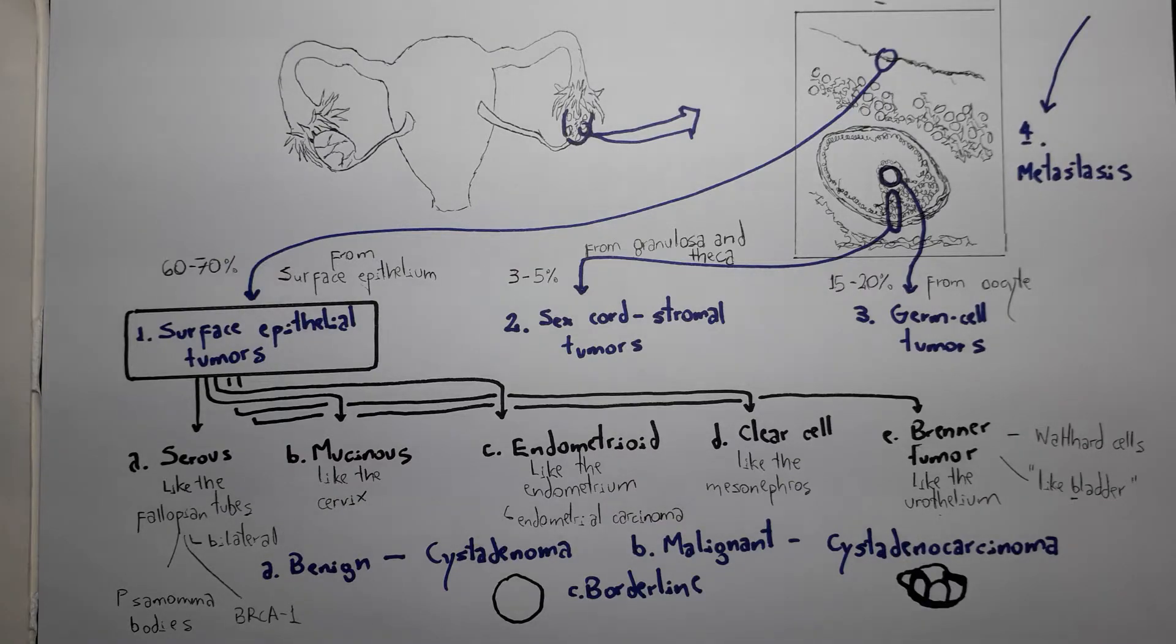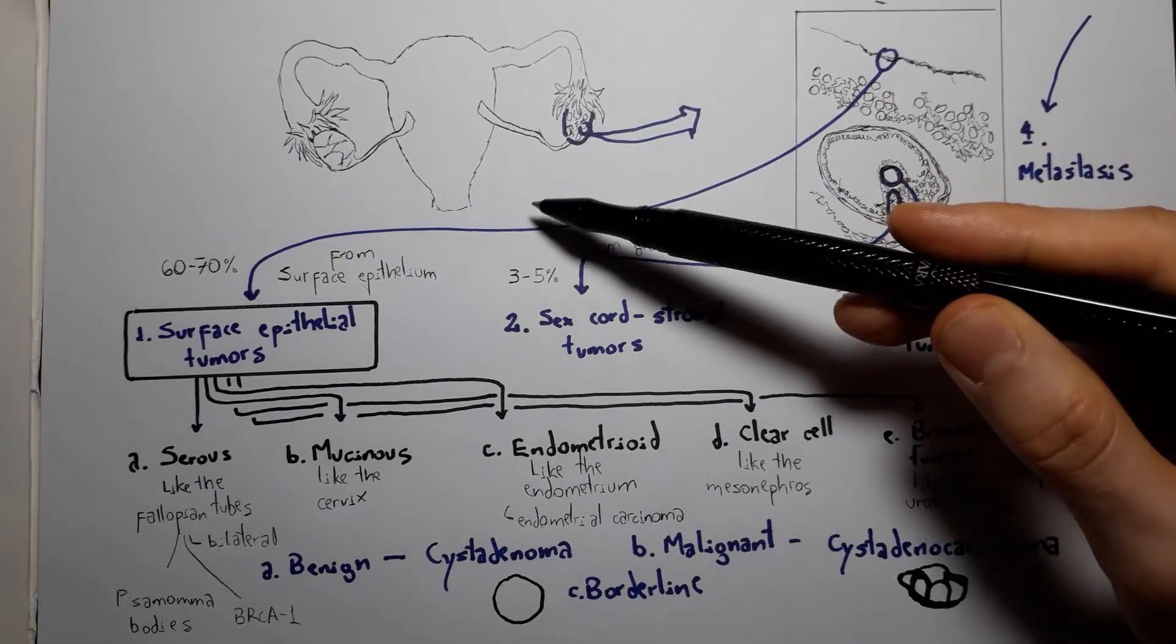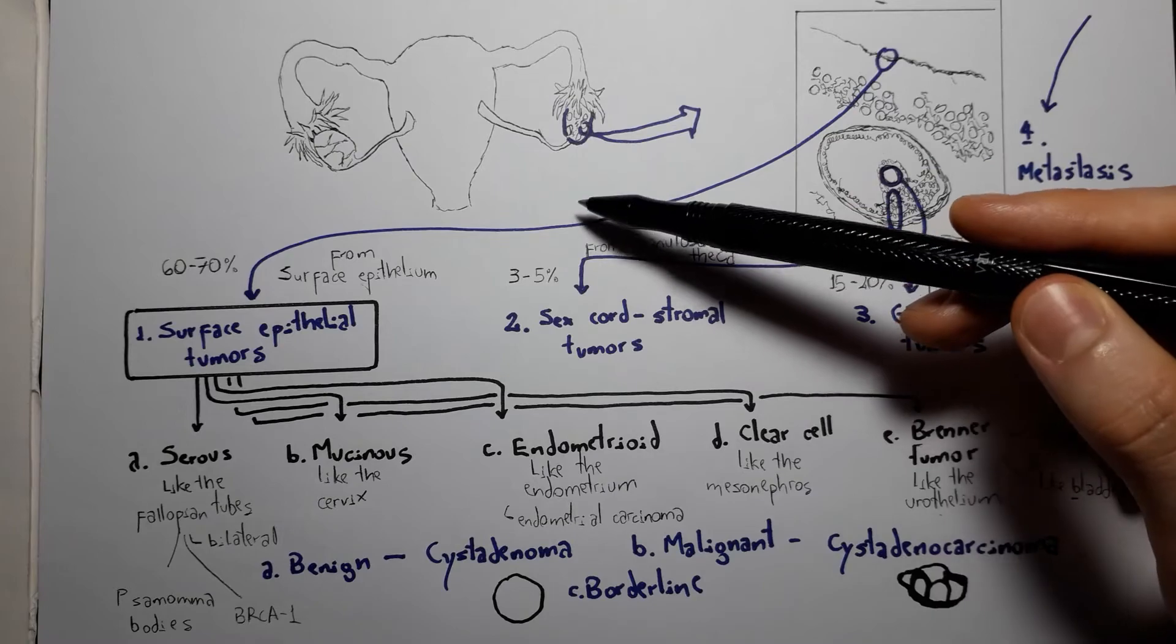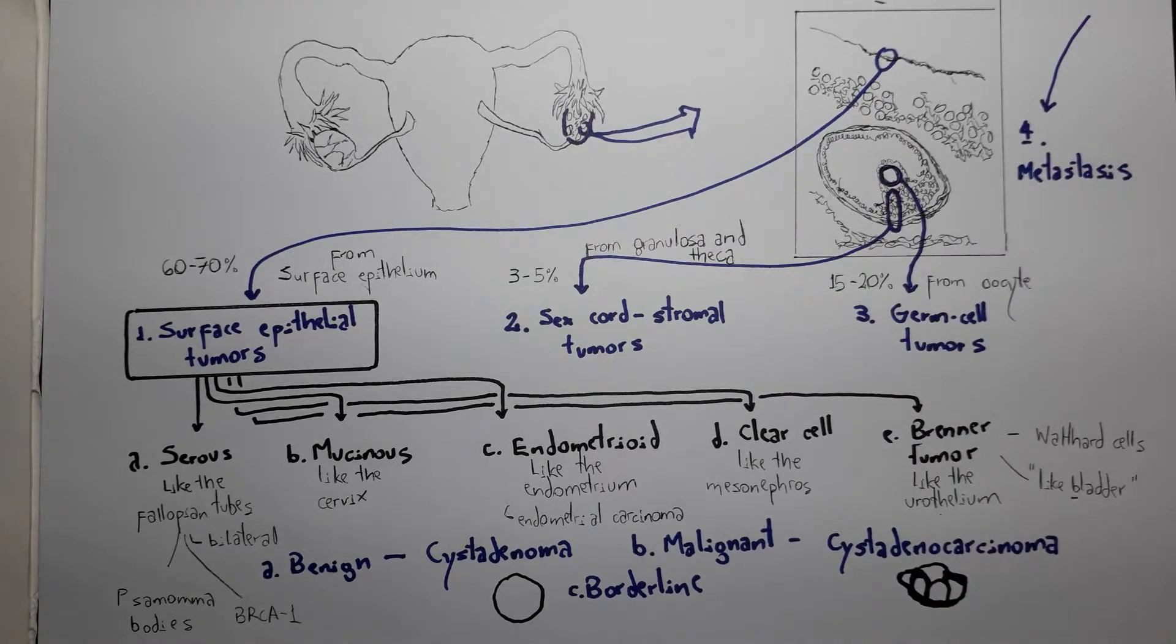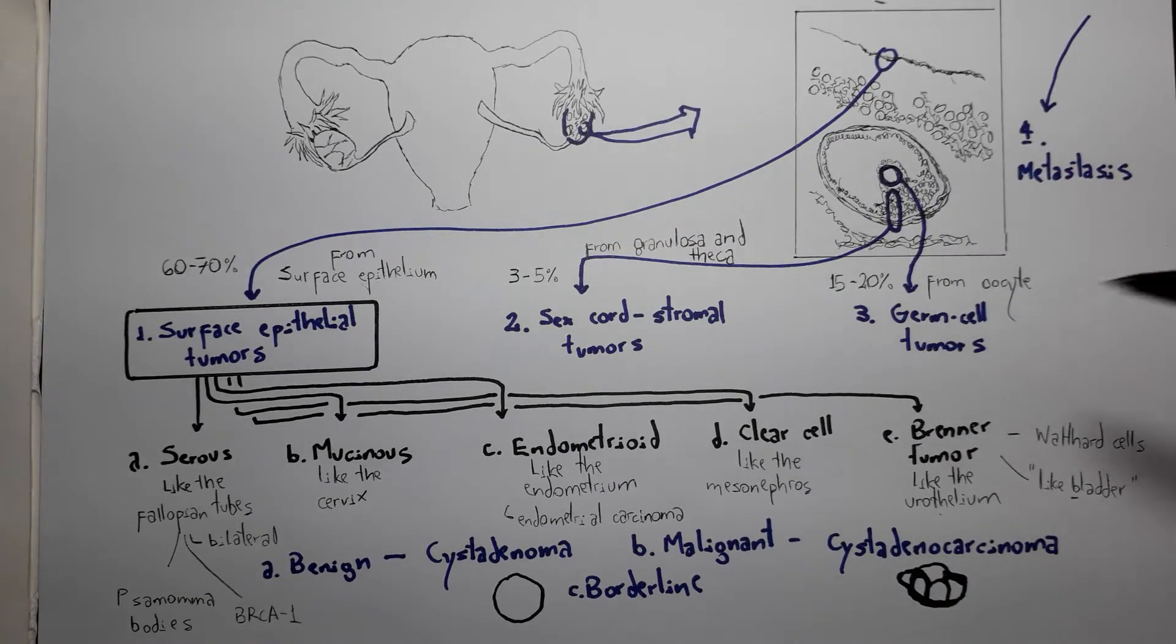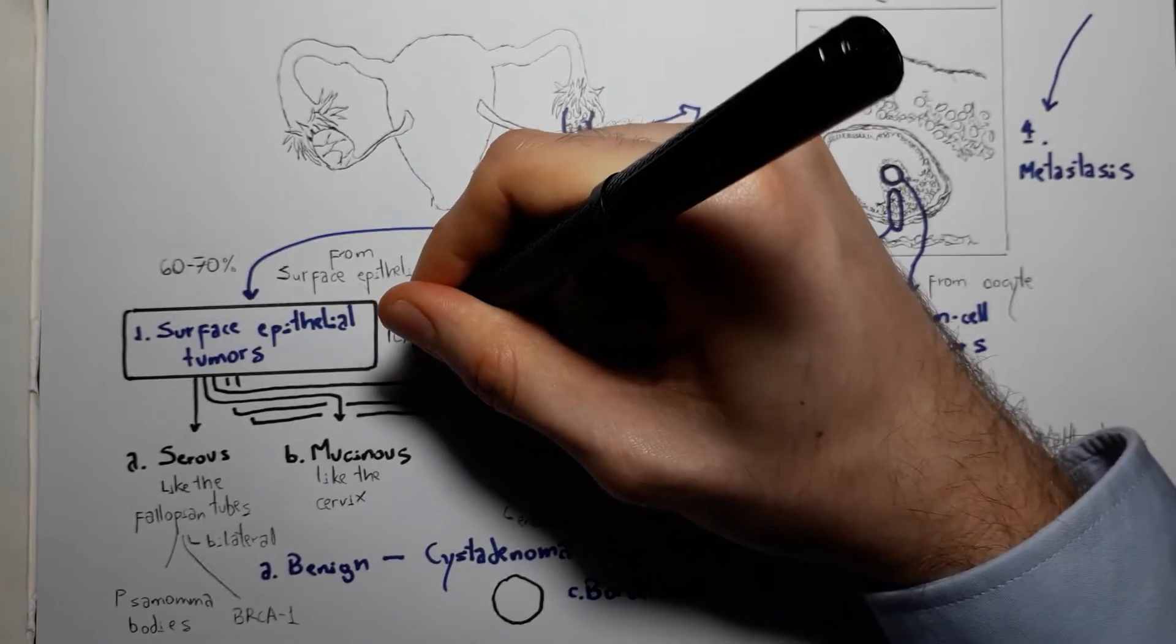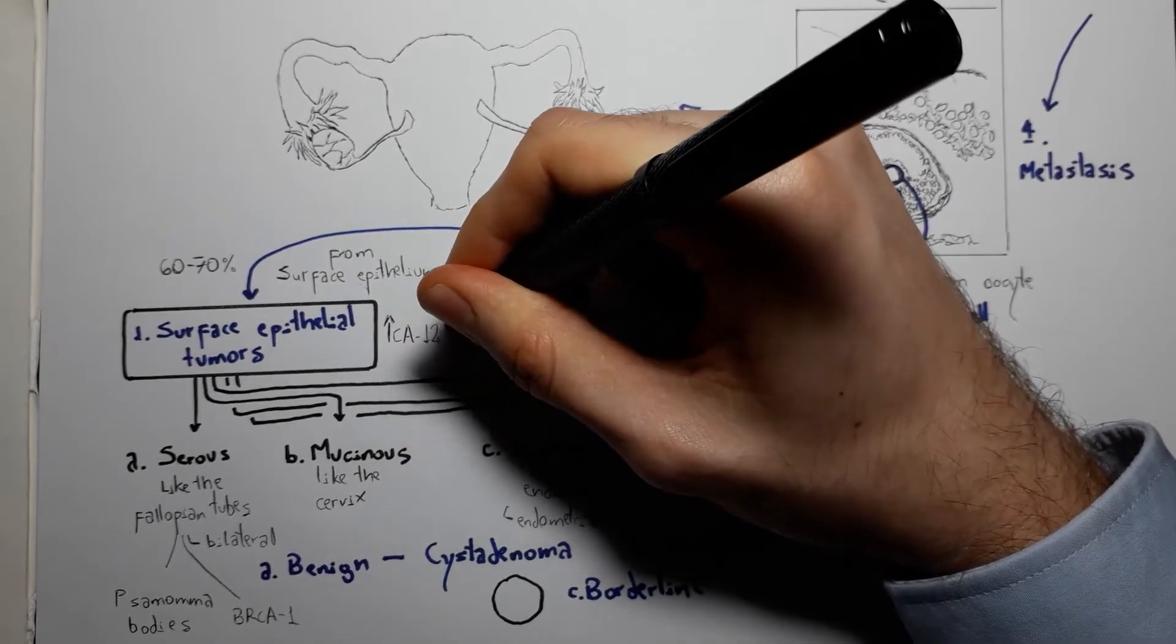As a whole, surface epithelial tumors are derived from coelomic epithelium. Therefore, they usually metastasize by seeding the peritoneal cavity or coelomic dissemination, and they present with elevated CA-125.